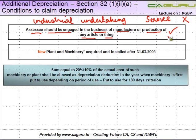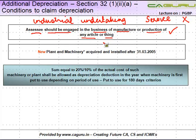So the SSE, or the person who is making a claim for additional depreciation, has to be engaged in the business of manufacture or production of any article or thing. That is about the first condition. Now let us look at the second one.